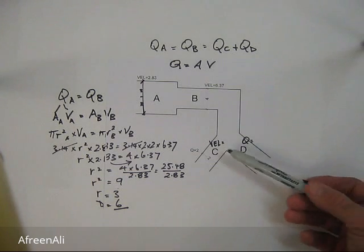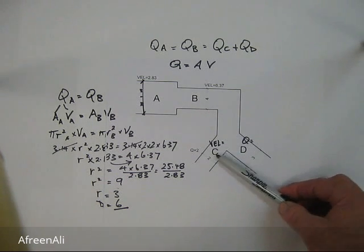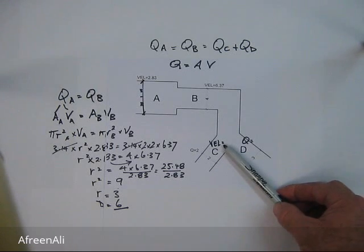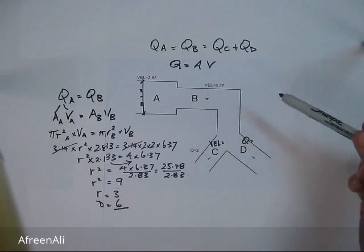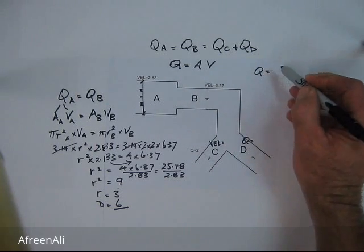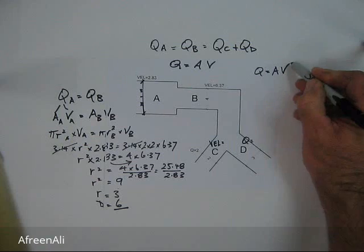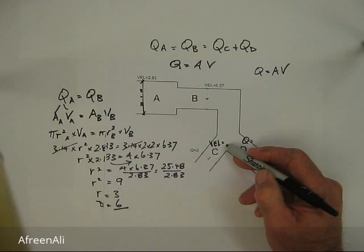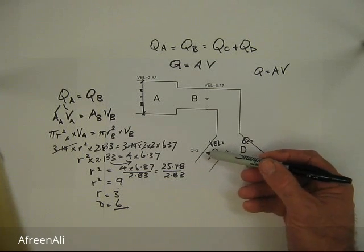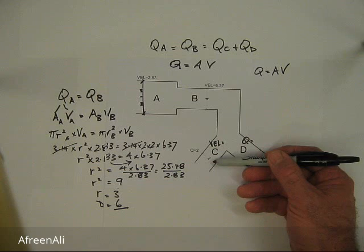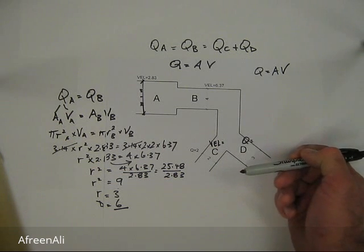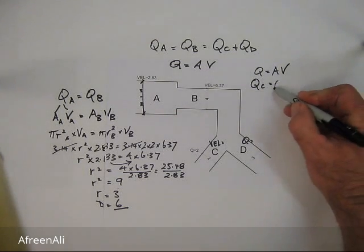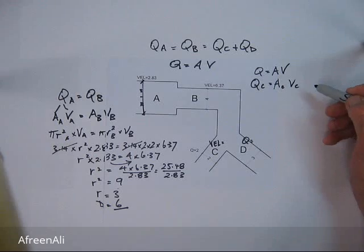The next piece of information we need to find is the velocity of the fluid flowing through pipe C. The formula we'll use is Q equals AV — flow rate equals area of pipe times velocity. Velocity is what we're trying to find. We have the flow rate and the diameter of the pipe. So: the flow rate at C equals the area at C times the velocity at C.